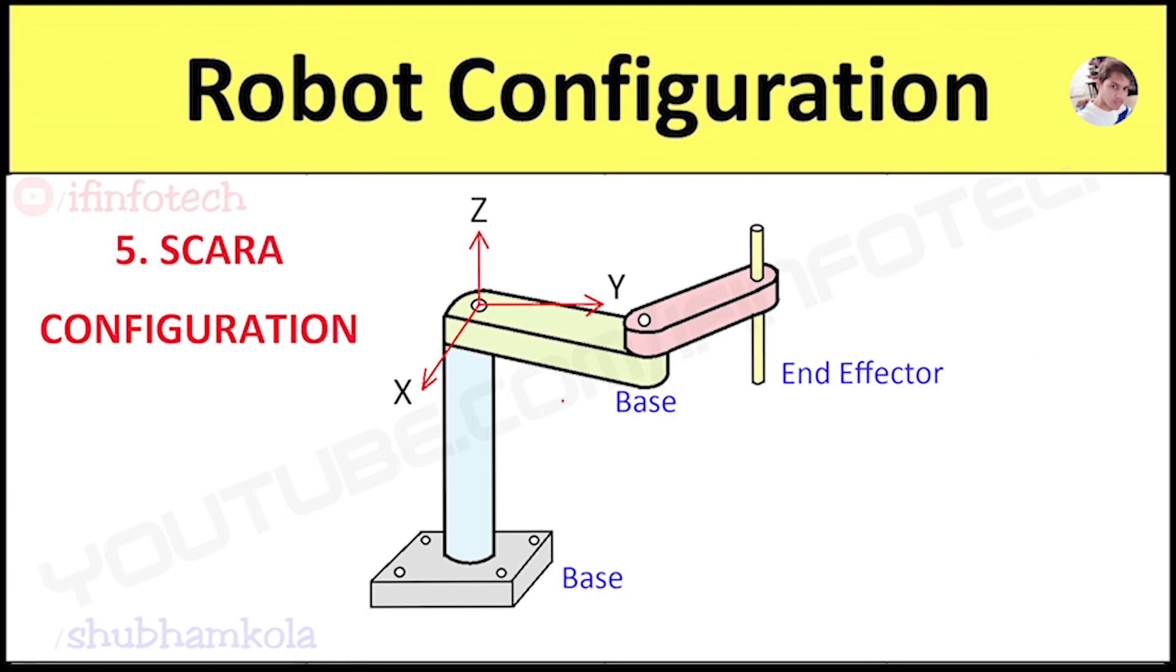Next is SCARA configuration. It is a special version of jointed arm robot whose shoulder and elbow joints rotate about vertical axis instead of horizontal. Its work envelope is cylindrical and much larger than all other configurations. The SCARA acronym stands for Selective Compliance Assembly Robot Arm or Selective Compliance Articulated Robot Arm.